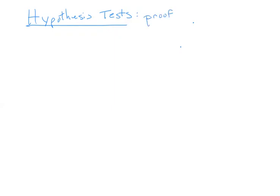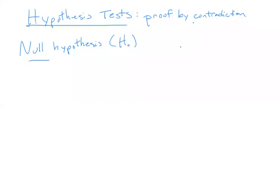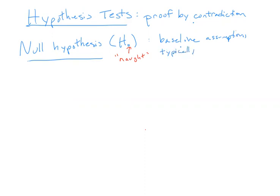Any hypothesis test is a proof by contradiction. That means that you make some initial assumption, you see what that assumption implies, and if what that assumption implies couldn't possibly be true or seems very unlikely to be true, then maybe your initial assumption is not true. The initial assumption in a hypothesis test is called the null hypothesis, and we typically notate that H naught — that is the baseline assumption, the assumption you begin with, and it's typically the assumption that there's no effect or no pattern.